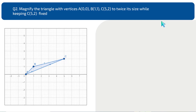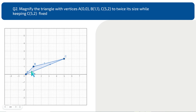The problem given to us is to magnify the triangle with vertices A, B, and C to twice its size while keeping the point C(5,2) fixed. The triangle has coordinates A(0,0), B(1,1), and C(5,2), and we have to increase its size by a factor of 2.